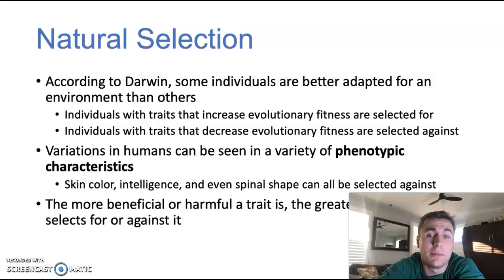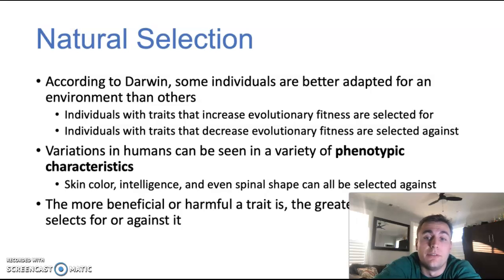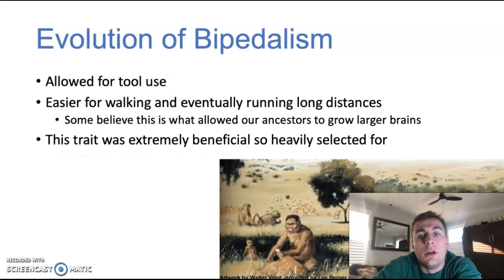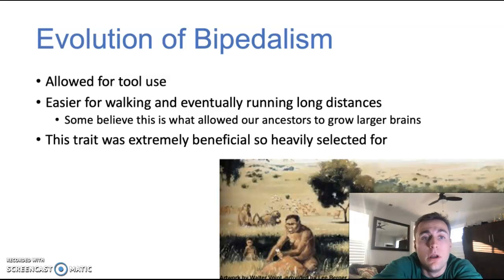The more beneficial or harmful a trait is, the greater degree nature selects for or against it. Basically, if a trait is very beneficial, you're going to see a lot more individuals with it. If a trait is very harmful, you're going to see a lot less. So let's get into the evolution of bipedalism — that's one of those traits that was heavily selected for in the early stages of the genus Homo.